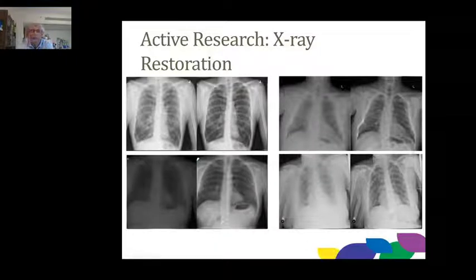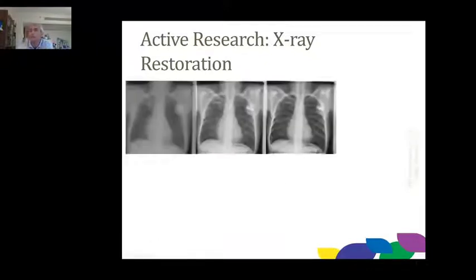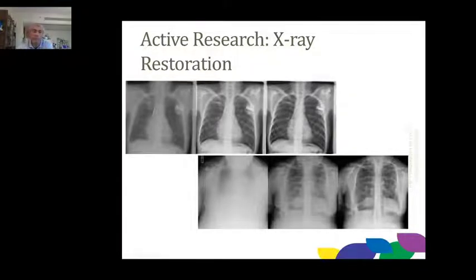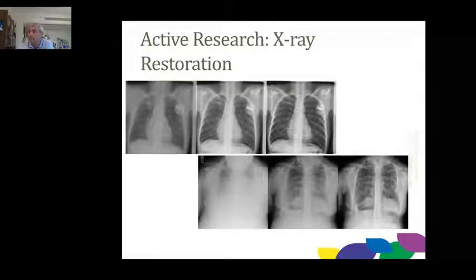On the last example, edges are not perfectly sharp, but applying two passes — we can get this X-ray from that one. As a radiologist or cardiologist, you would not want to analyze the distorted X-ray, but you would be happy to see all the details in a restored one.